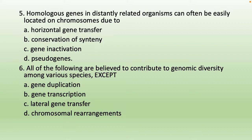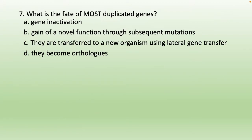Review questions: Homologous genes in distantly related organisms can often be easily located on chromosomes due to conservation of synteny — answer is B. All of the following contribute to genomic diversity among various species except gene transcription — answer is B. The fate of most duplicated genes is gene inactivation.